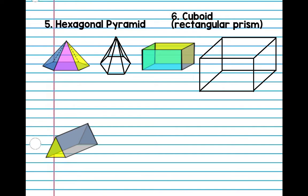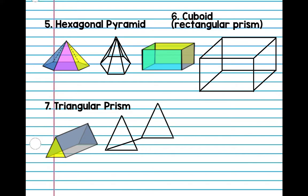Number seven — you guys know what this one is — triangular prism. See what I mean: you just draw two triangles and connect them.